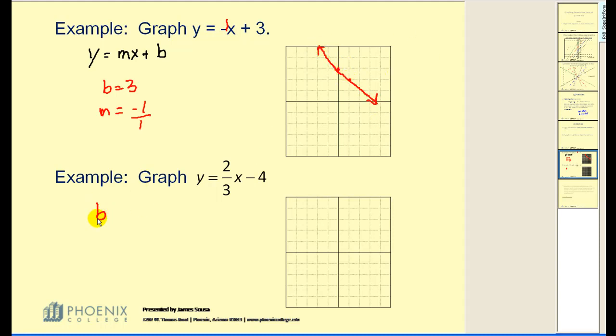Let's try another. What would our y-intercept be? Our y-intercept is negative 4. Our slope of this line is positive 2 thirds.